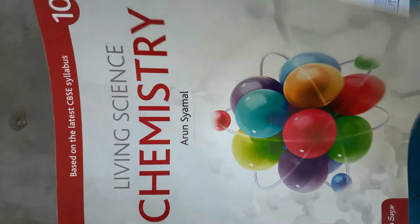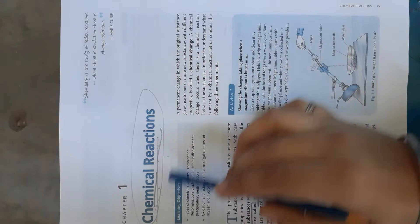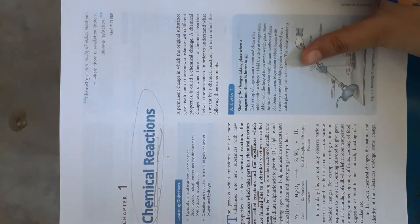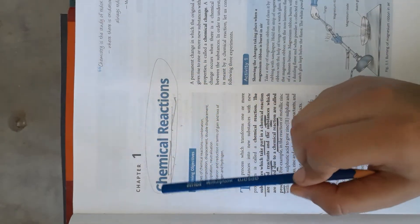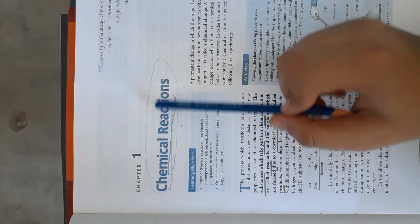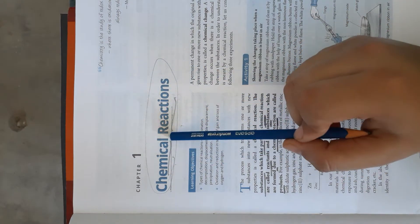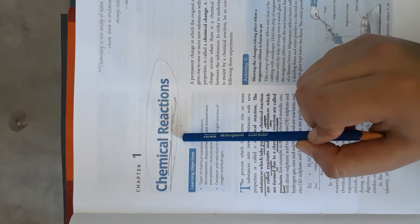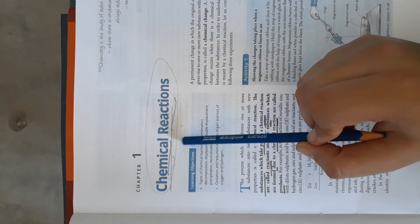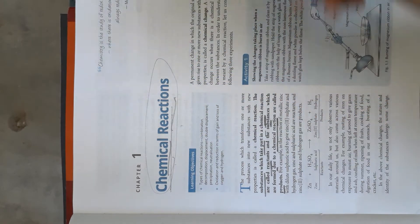Our first topic is chemical reactions. What is a chemical reaction and how does it occur? If you have ever observed in your daily life, chemical reactions happen in our surroundings. Let us start with some examples.